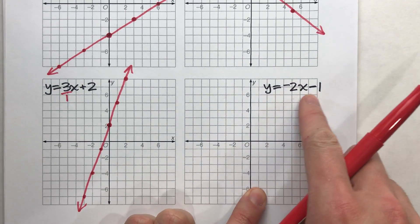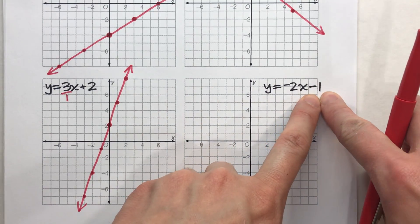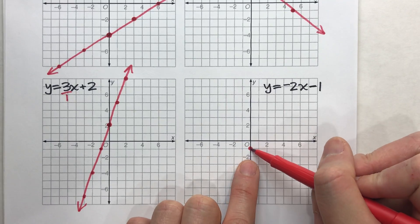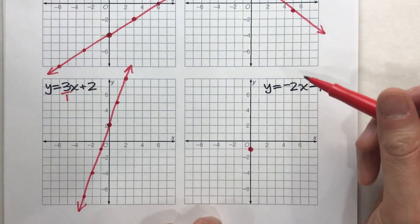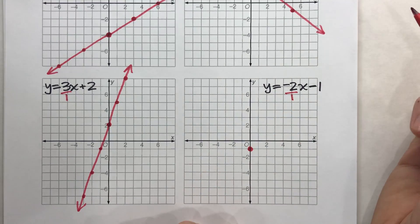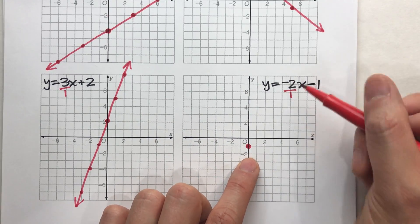Last one. Y equals negative two x minus one. Again, look for that y-intercept. It's the number on the end that doesn't have the x next to it. Negative one, right there. Now, again, my slope's a whole number. Let's put it over one. So it'll be a fraction. So I know the rise and the run. Here we go. Negative two over one. So that means from here, I go down two, right one.